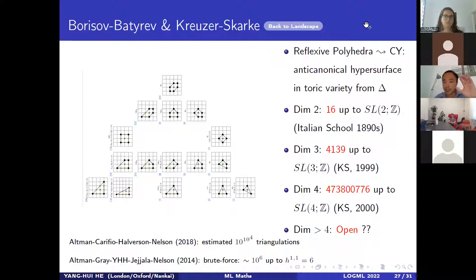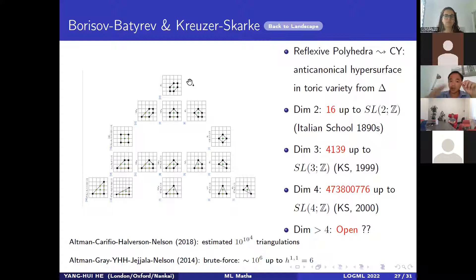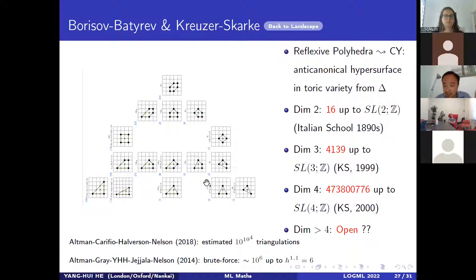A reflexive polyhedron is a lattice polyhedron — a convex body in dimension n such that all vertices are lattice points, all bounding faces (codimension-one objects) are at distance one from a single interior lattice point. In dimension two these are called reflexive polygons. It was known in the 1890s by the Italian school of geometry that in every dimension there is a finite number of these up to SL(n,ℤ). In dimension two, up to SL(2,ℤ), there are exactly 16.